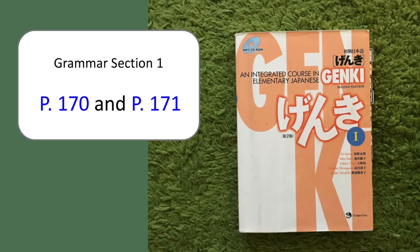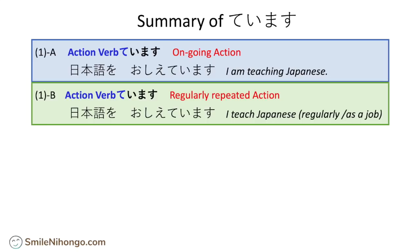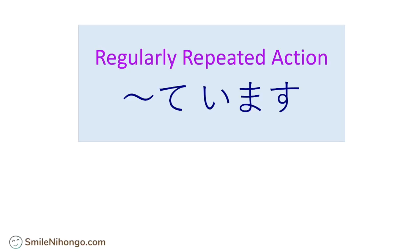If you happen to have the book already, please refer to the grammar section 1 on page 170 and 171. We have learned this much so far. In the previous lesson, we learned how to use the te-form imasu expression to describe ongoing actions, as in 'I am teaching Japanese right now.' Today, I am going to introduce another function of te-form imasu, which is to describe repeated actions — something that you do over and over again, either as a routine or as a job. Let's get into today's lesson.